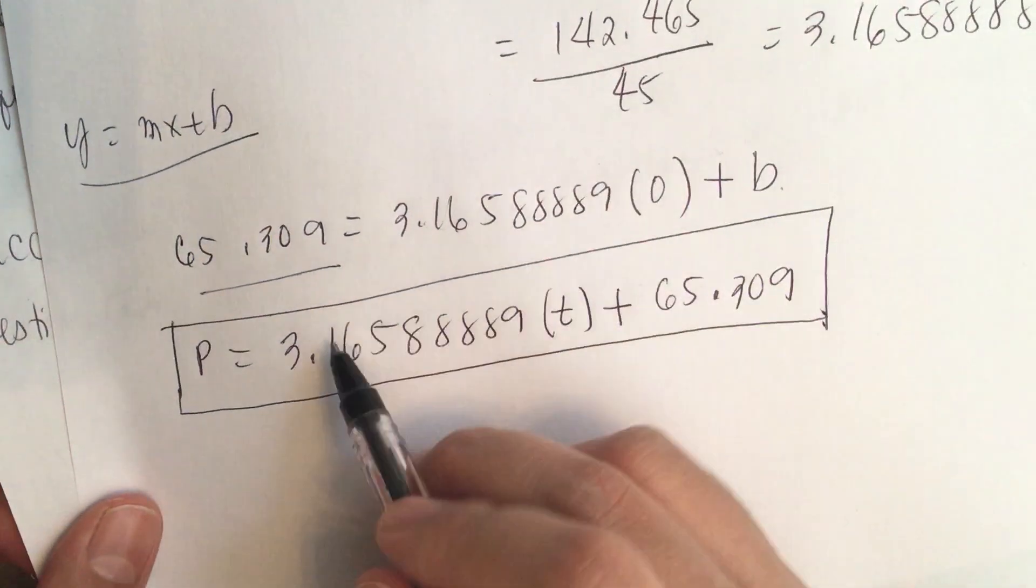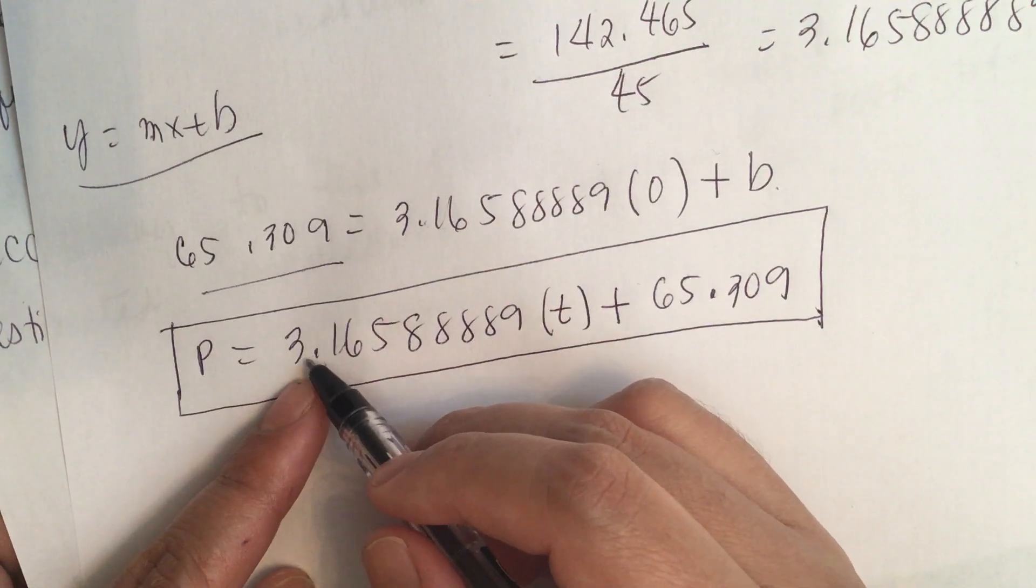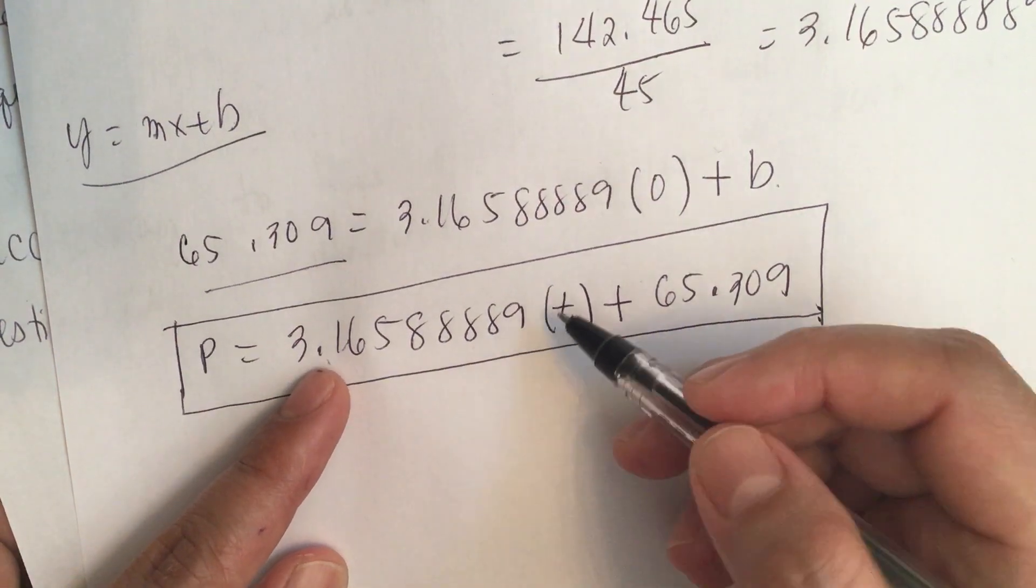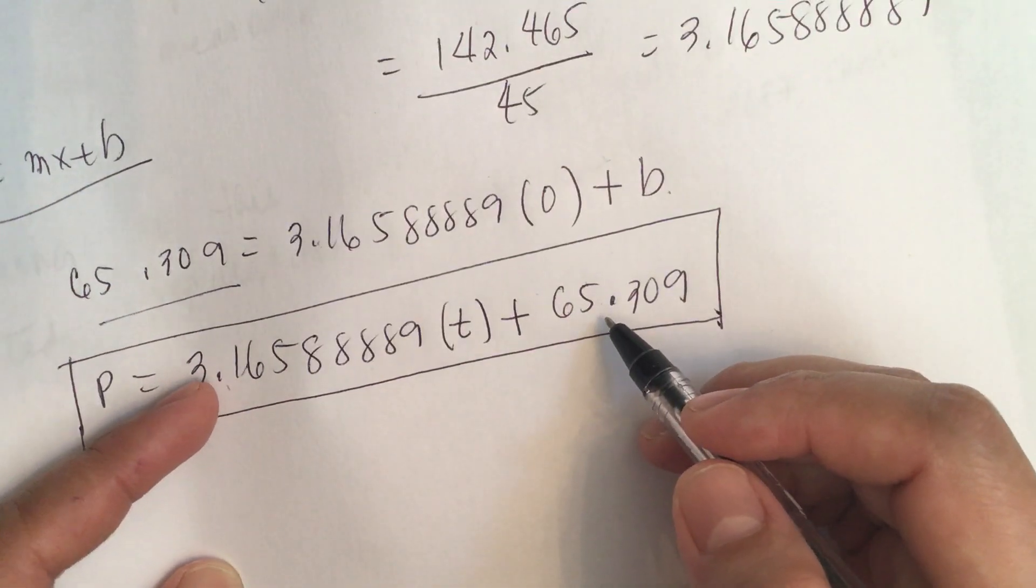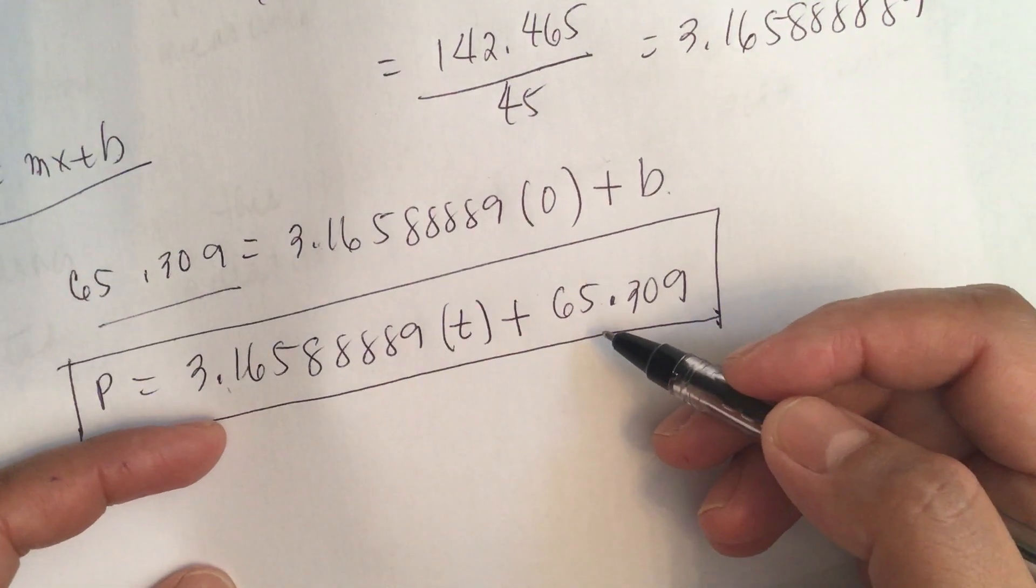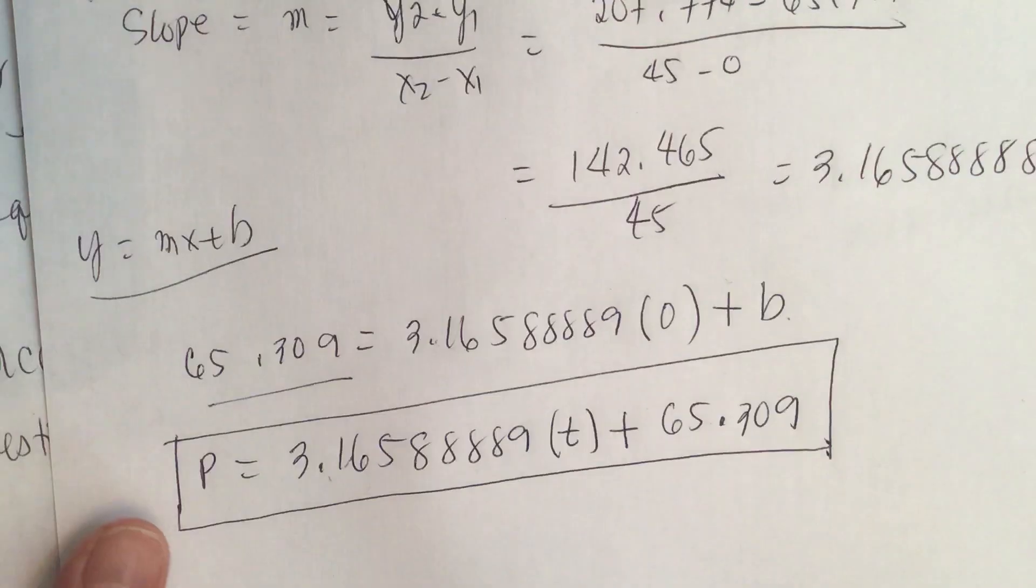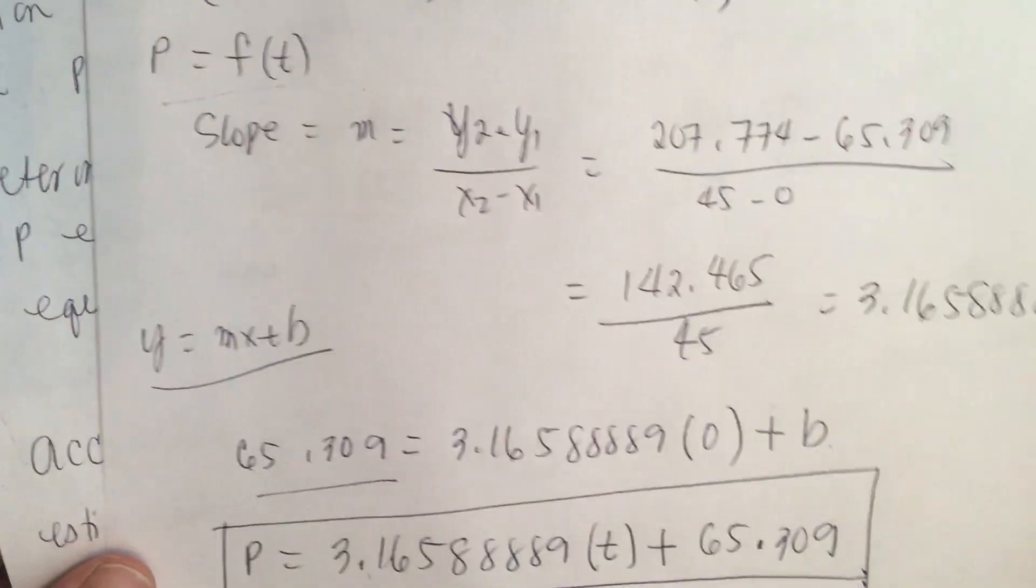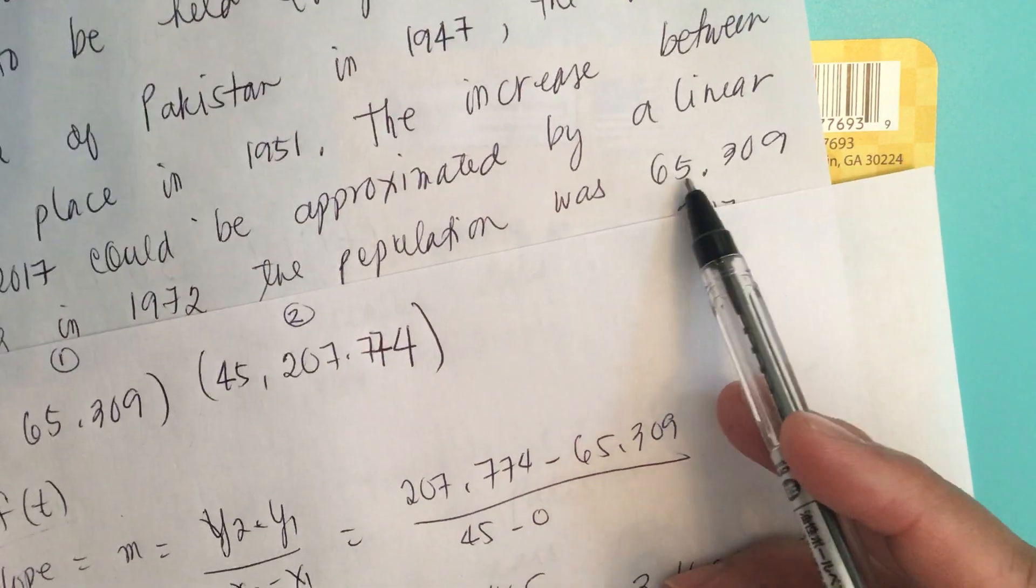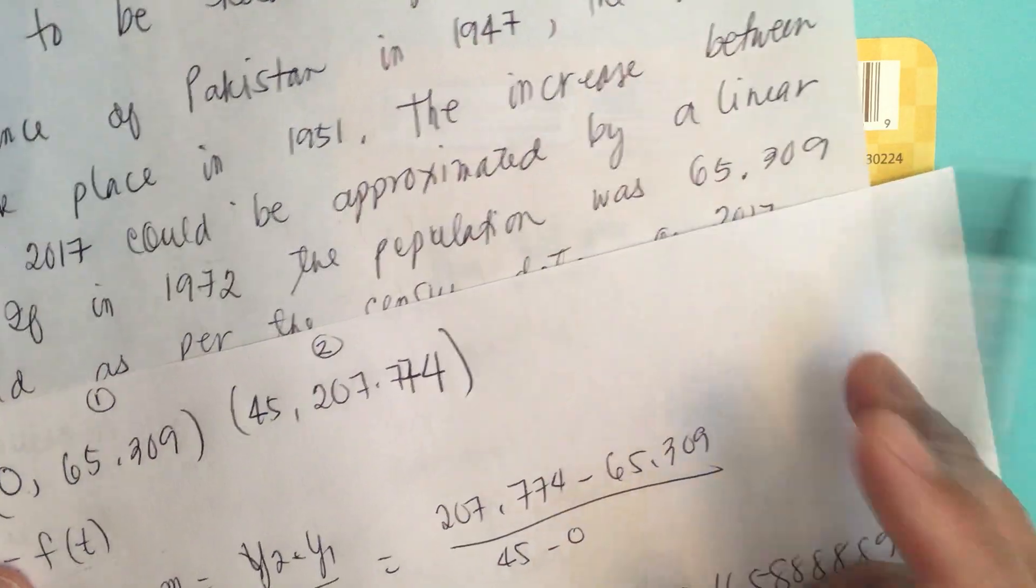The slope is the change in the population per year. And the Y-intercept is the initial or starting point of the census, when they started the census, which is in 1972. They started the census in 1972, when the population was 65.309.